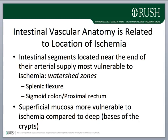The intestinal vascular anatomy is related to the location of ischemia. Intestinal segments near the terminal distribution of their arterial supply are the most vulnerable — these are called watershed zones. Two specifically are the splenic flexure of the colon, and the sigmoid colon and proximal rectum, where you reach the terminal distribution of the inferior mesenteric artery and the proximal aspects of the pudendal and iliac arteries.